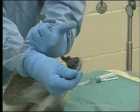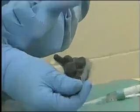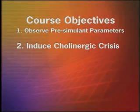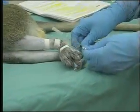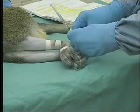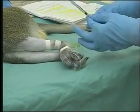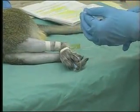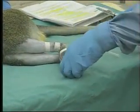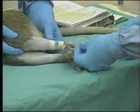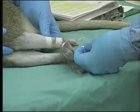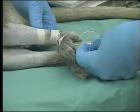This will change once you give the simulant. The second objective is to induce a cholinergic crisis. Once everyone's evaluation of the non-human primate is complete, physostigmine is administered via the vascular line. Physostigmine is a cholinesterase inhibitor of the carbamate group.